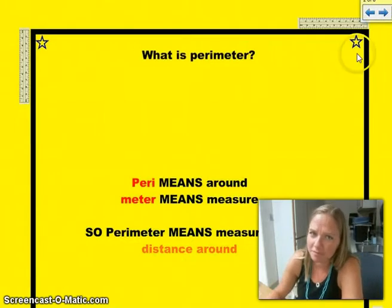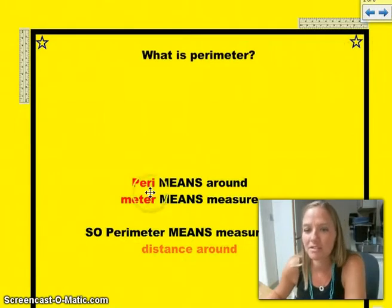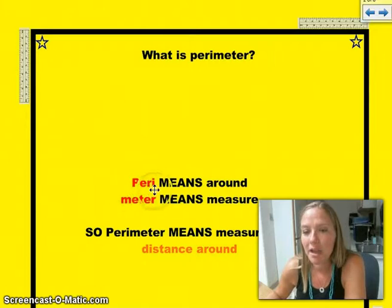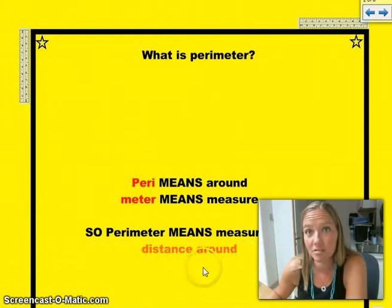What is perimeter? This is kind of interesting because it says peri means around and meter means measure. So altogether, perimeter means the measure or distance around something.